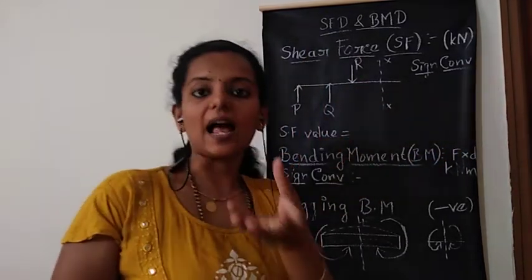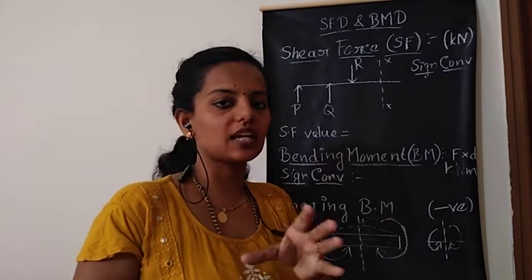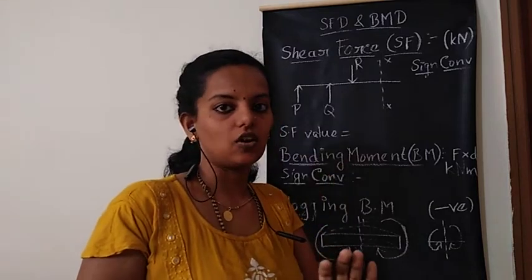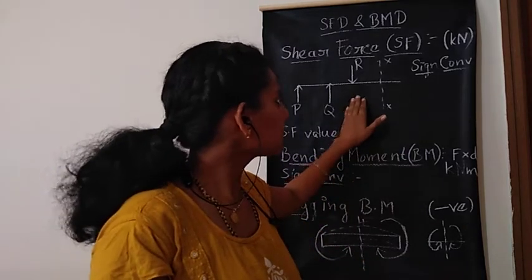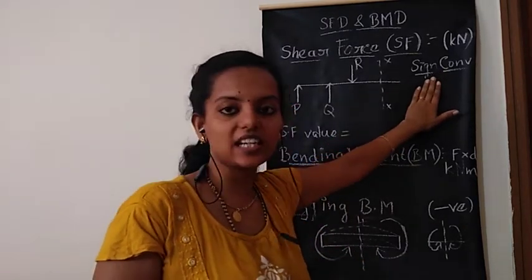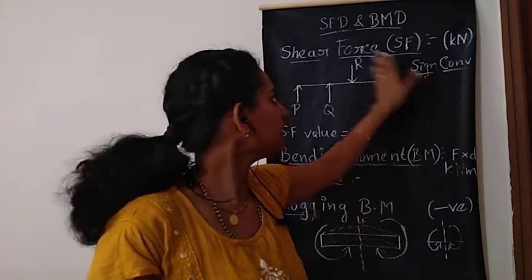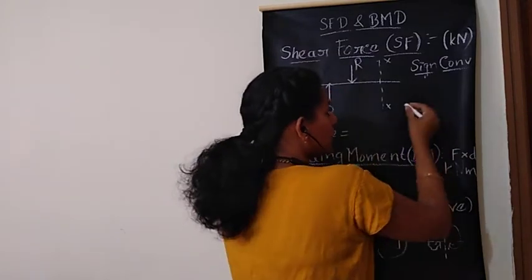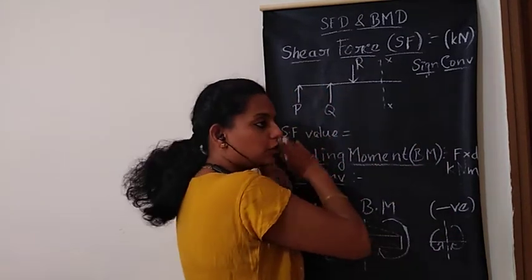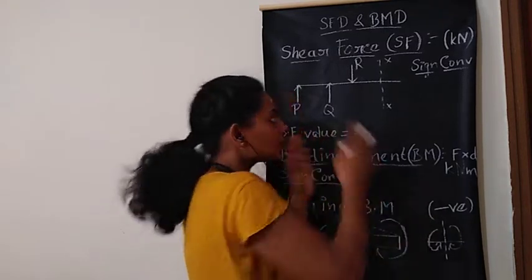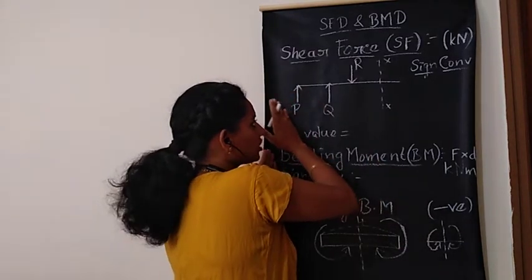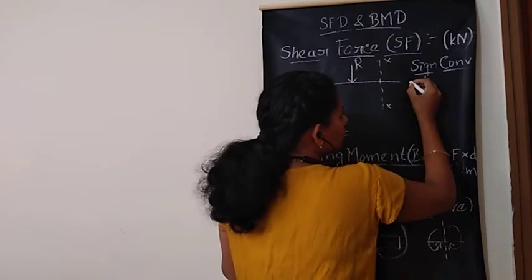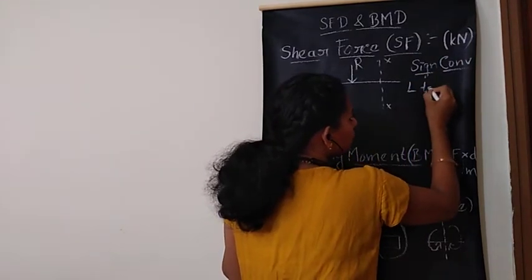For that, what do you mean by algebraic sum? Algebraic sum is nothing but we have to consider these forces along with the sign. So first we will see what is the sign convention that we have to consider to calculate shear force. We can take both ways — you can calculate the force from left to right or right to left. I will consider shear force from left to right.